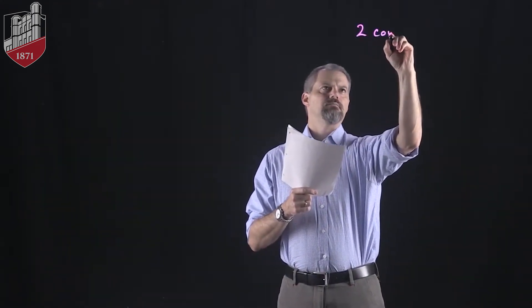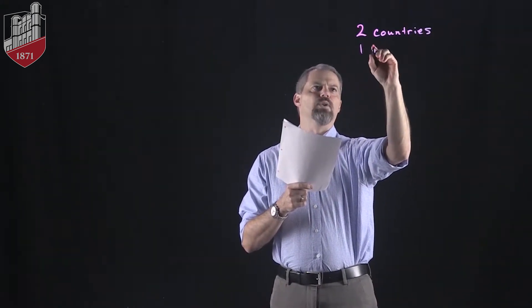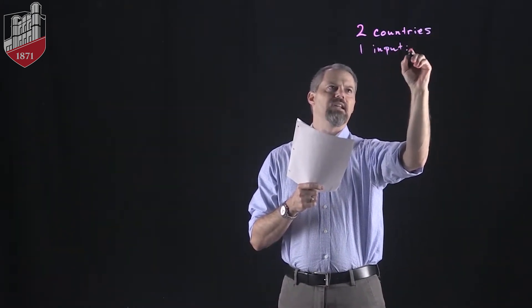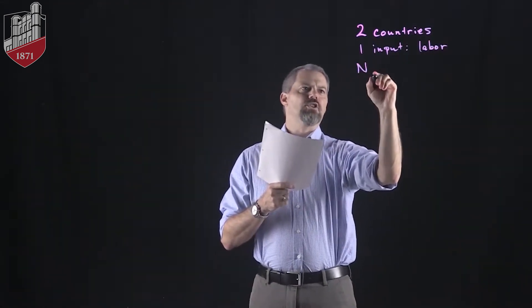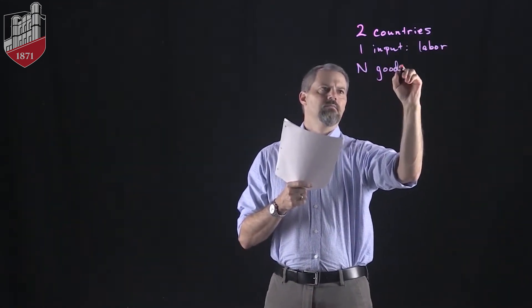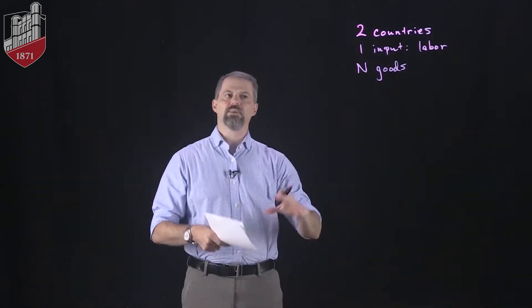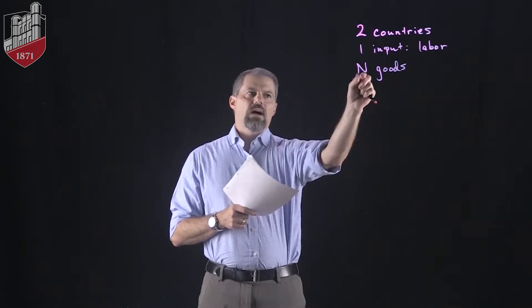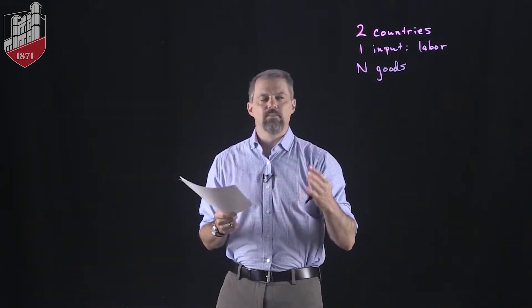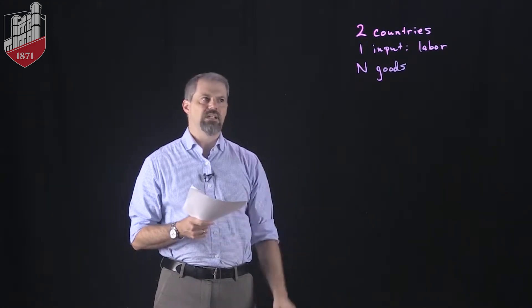So we'll have two countries, home and foreign, one input which is still labor, and we'll think about N goods. N could be 3, it could be 5, it could be 100. Clearly, we wouldn't do a problem where N is very big, but there's no reason why we can't make N as large as we need to.